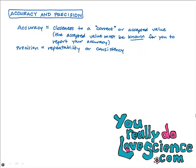You can have good precision and good accuracy, which is ideal, or you can have good precision with poor accuracy. And think about it — if your measurements are consistent and they're not all over the place, then you're probably doing a good job and being careful in your lab.